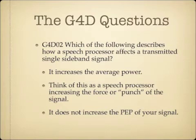Which of the following describes how a speech processor affects a transmitted single sideband signal? The answer is that it increases the average power. Think of this as giving your signal a little bit more force or punch, but not more power. A speech processor will increase the average power of your signal, but it does not increase the peak envelope power of your signal. So think of it as making your signal more clear, but not more powerful.